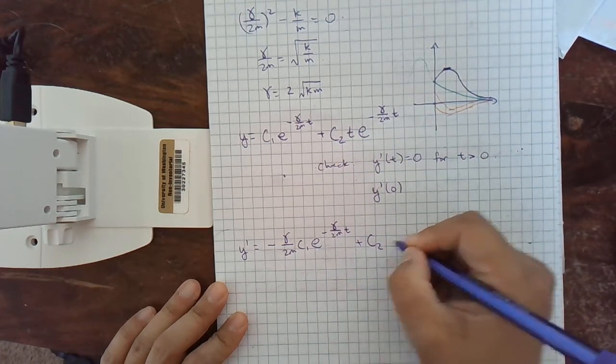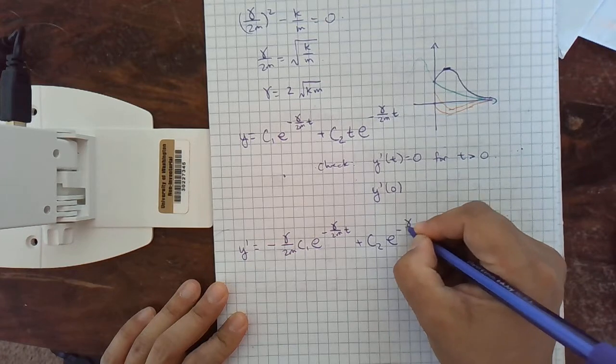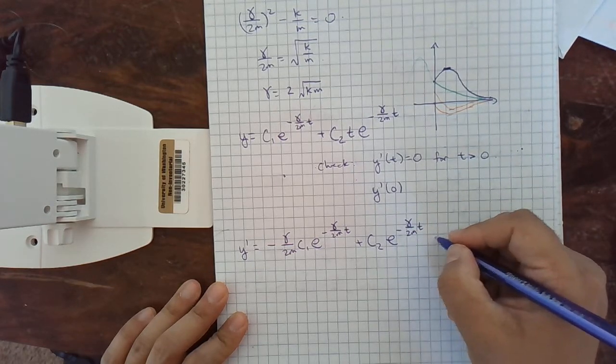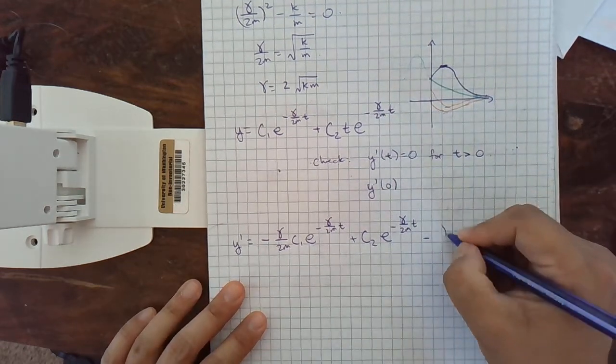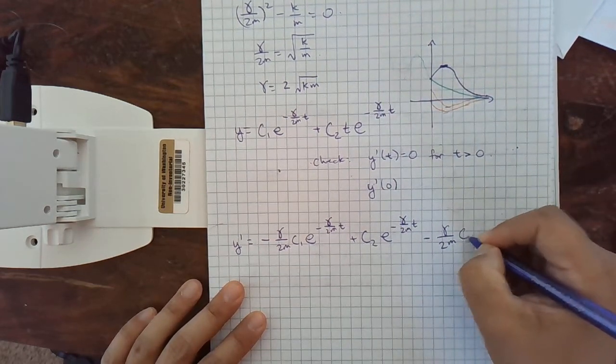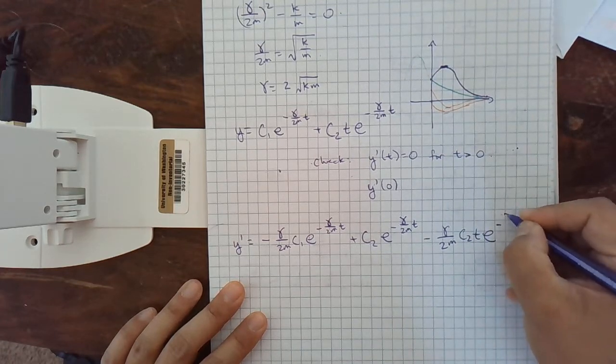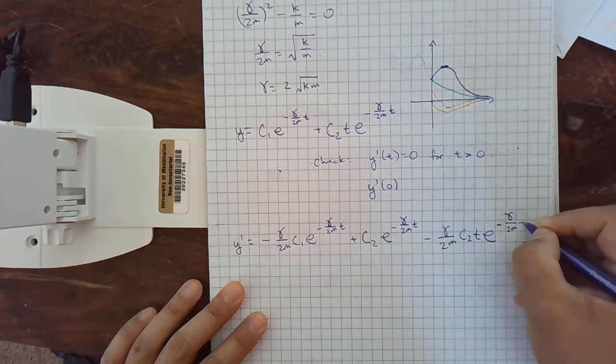So, we have the derivative of t as 1. And we write the other factor here. And then a plus, except it's a minus because we're going to have a chain rule again. So, minus gamma over 2m c2. We write t as is. This is the rest of the derivative with the chain rule. 2m t.